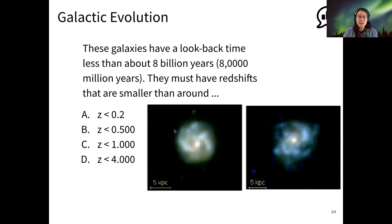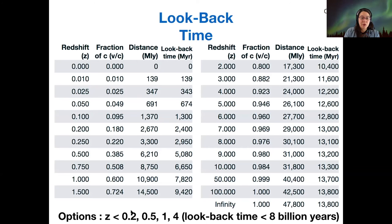So if our look-back time for these is about 8 billion years, then tell me about their redshifts. I'm going to give you that table. I'll put these options A, B, C, and D: 0.2, 0.5, 1, and 4. Figure out what is the redshift that corresponds to a look-back time of 8 billion years.